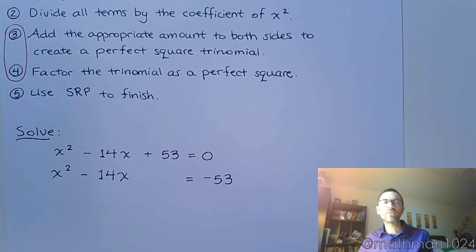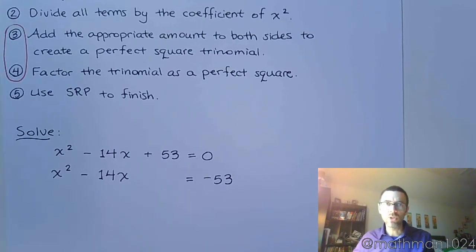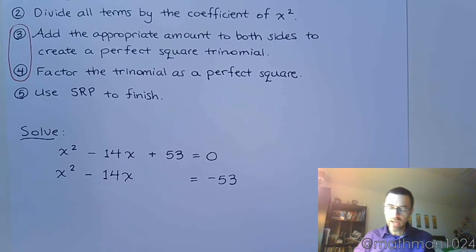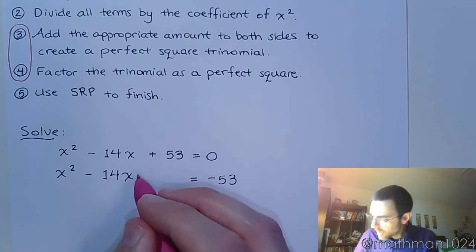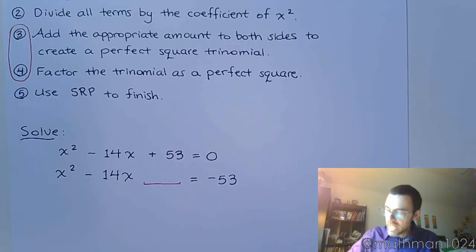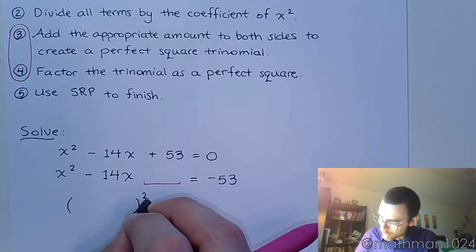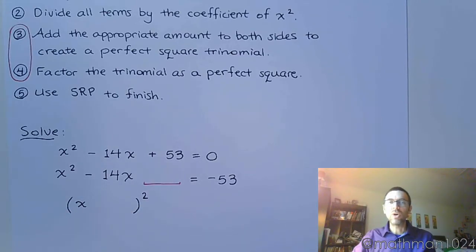Step 2 is to divide all terms by the coefficient of x squared. Well, the coefficient of x squared is 1. If I divide everything by 1, nothing is going to change. So step 2 is pretty much already done for us. Now, steps 3 and 4 require you to find that missing piece and take that trinomial and factor it as a squared. So I suggest that we do this all at the same time.